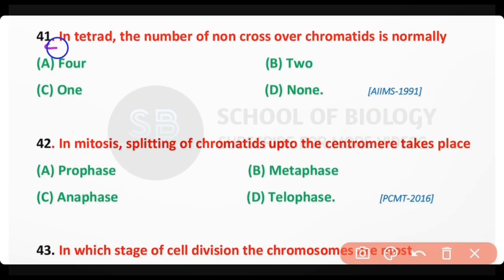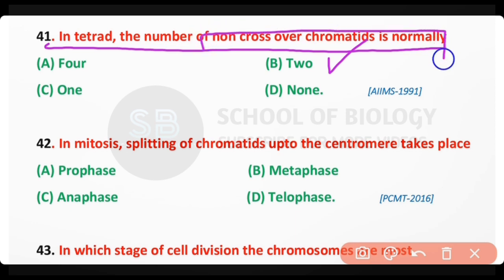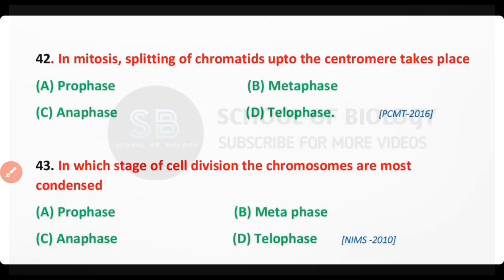Question number 41. In a tetrad, the number of non-crossover chromatids is normally: 4; 2; 1; none of these. The correct answer is option A. During a tetrad, the number of non-crossover chromatids is 2, and the number of crossover chromatids is also 2.